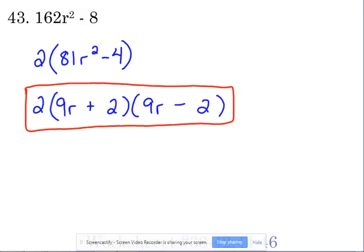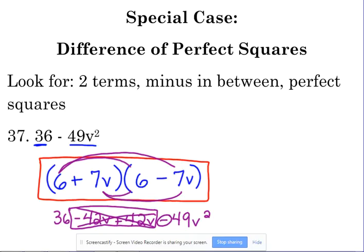I purposefully picked these two examples. Let's look back at number 37 really quickly. A lot of people don't like that the variable comes second. We're used to the variable being in the first term. It's okay. Just leave it the way that it is. Don't try and reverse the order because you're going to mess up the signs. Do not try and reverse the order because you're going to mess up the signs.